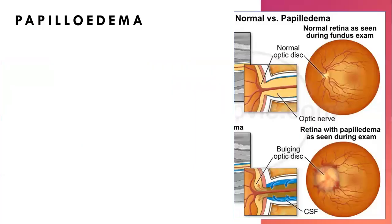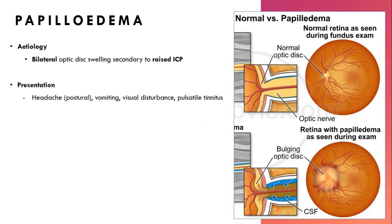Papilledema: the swollen disc is due to CSF in the subarachnoid space exerting mechanical pressure on the optic disc, causing it to swell. It's bilateral due to raised ICP. Symptoms include headache, TVOs, diplopia, and pulsatile tinnitus — where the patient can hear their own heartbeat or a whooshing sound, sometimes intermittently.